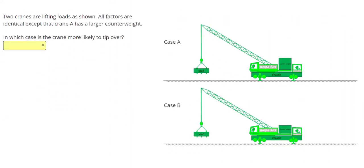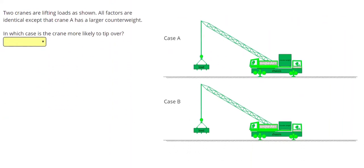In our next problem, two cranes are lifting loads as shown. All factors are identical except that crane A has a larger counterweight.